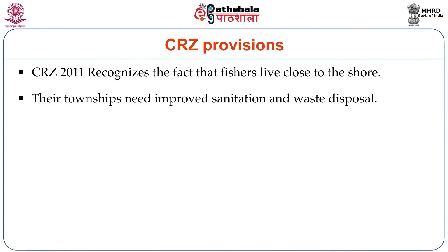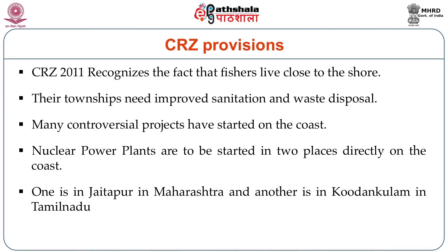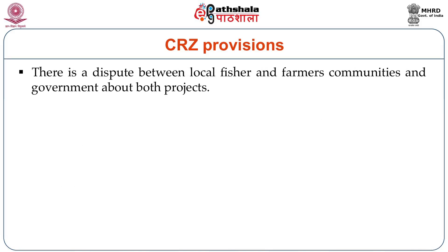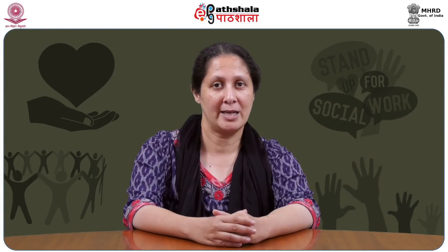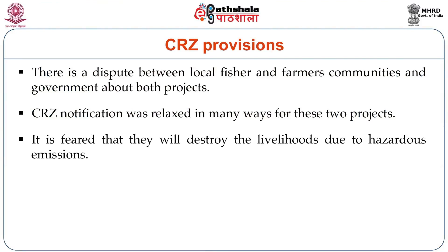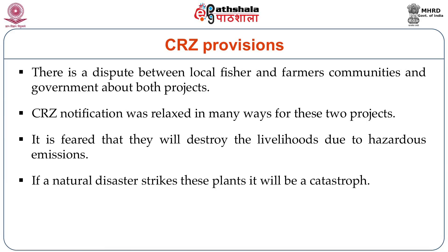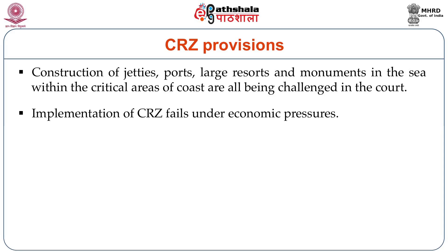Many controversial projects have started on the coast. One is in Jaitapur in Maharashtra and another is Kudankulam in Tamil Nadu. There is a dispute between fisher and farmer communities and the government about both these projects. In both places, people have protested very strongly but the government has not accepted. CRZ notification was relaxed in many ways for these two projects. It is feared that these projects will destroy the livelihoods of people with hazardous emissions, and if a natural disaster strikes, there will be a catastrophe. Construction of jetties, ports, large resorts, and monuments in the sea within critical areas are all being challenged in court. Implementation of coastal regulation zone notification is failing in many places because of economic pressure.